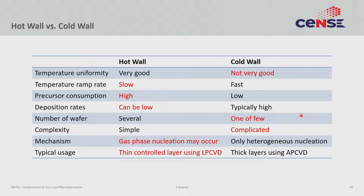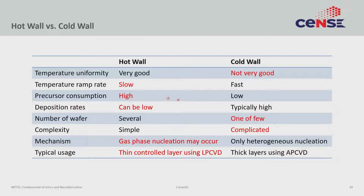Precursor consumption is another aspect. In a cold wall reactor, precursor consumption is typically low because only the wafer is hot. In a hot wall reactor, precursor consumption is high because the chamber is also hot — chemistry happens wherever temperatures are high: in the gas phase, on the surface, on the wafer, and on the chamber walls. The cold wall reactor's deposition rates can be very high, because all the precursor goes to the one hot thing, which is the wafer.